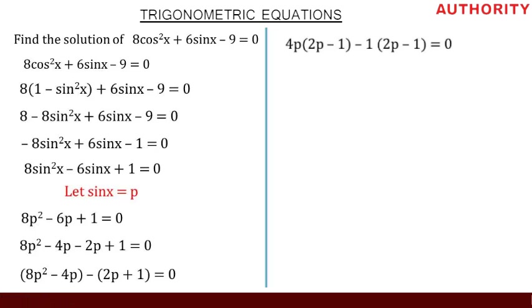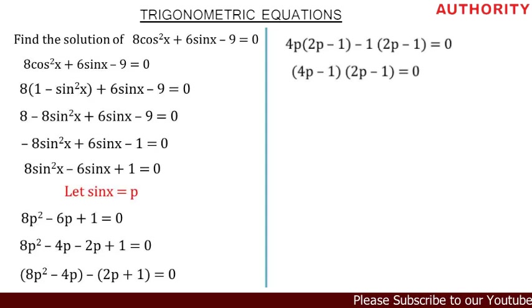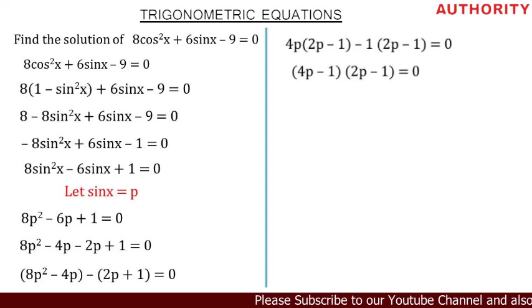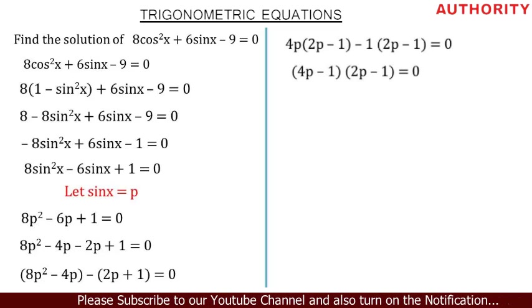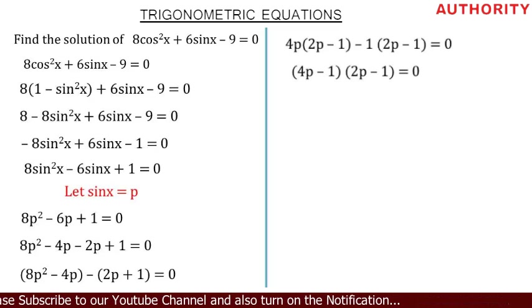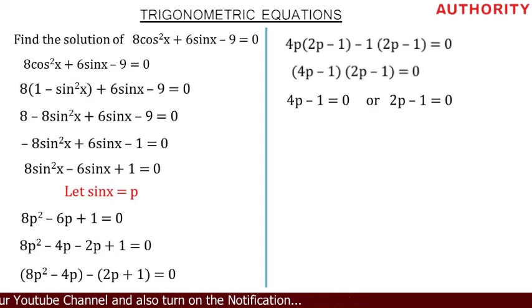Both brackets contain the same factor (2p − 1), so we pick one and collect the outside values. This gives us (4p − 1)(2p − 1) = 0.